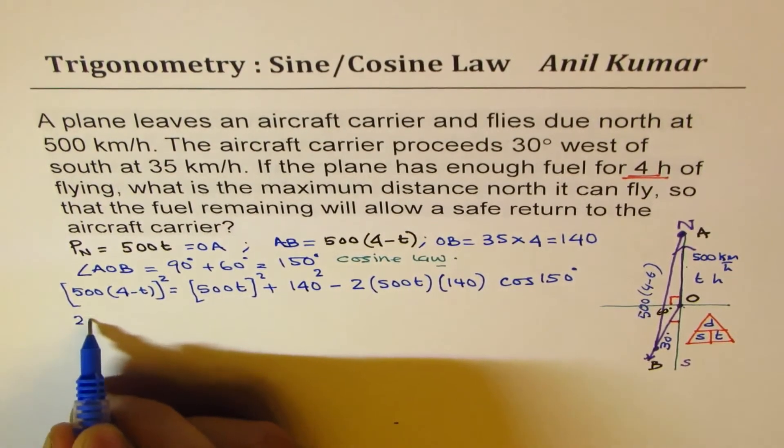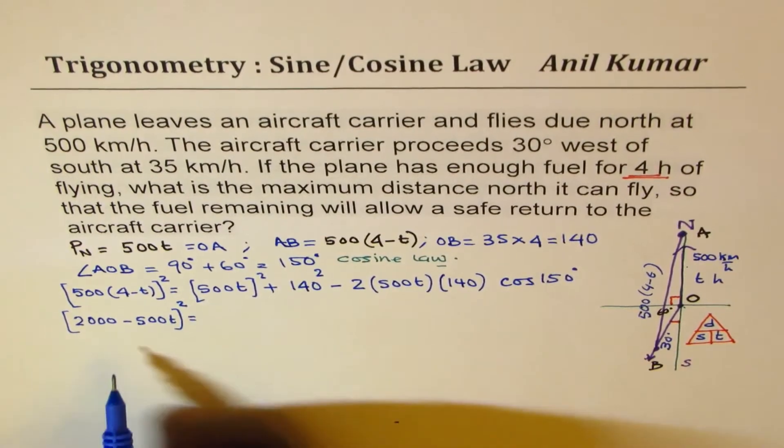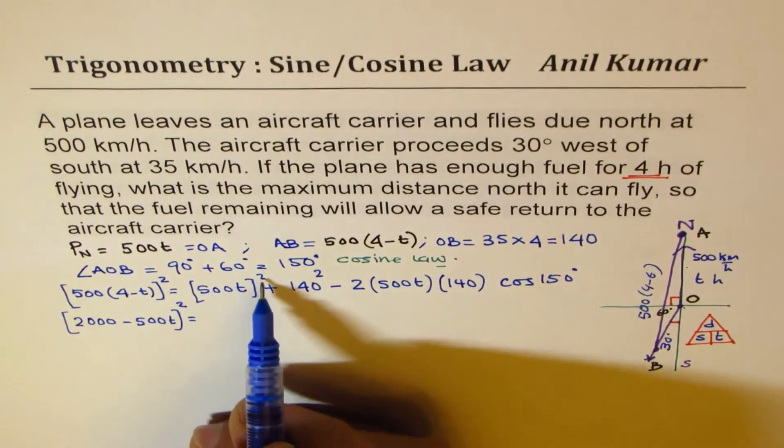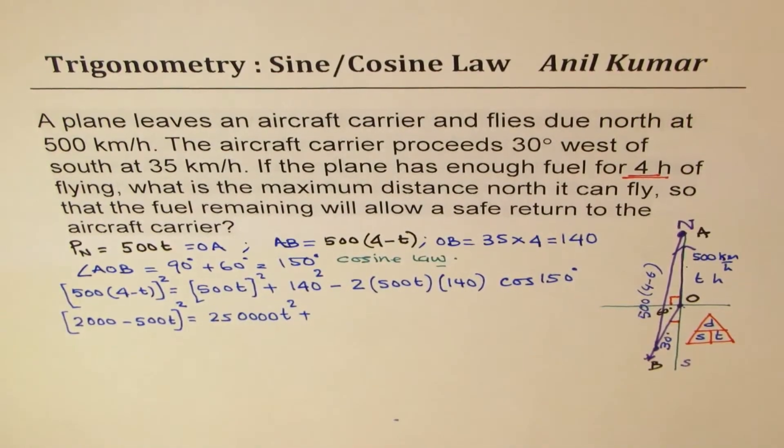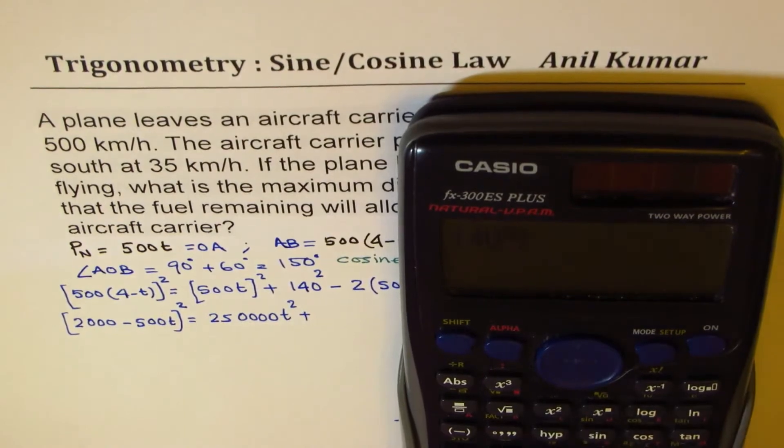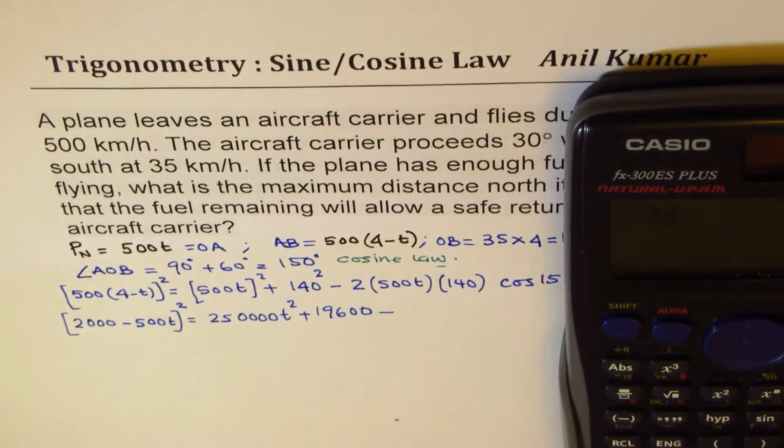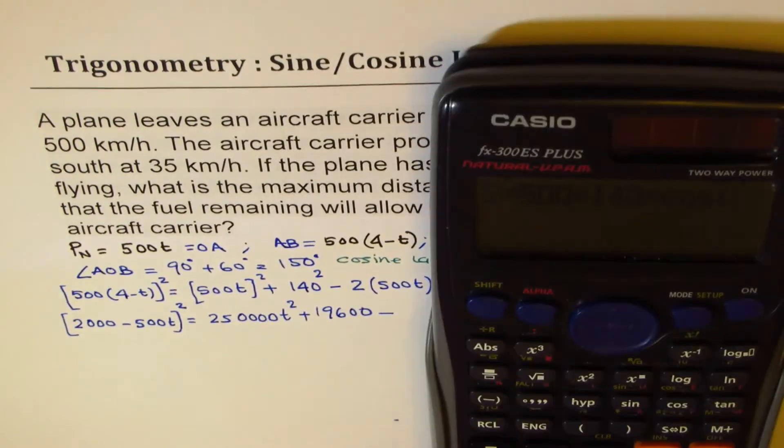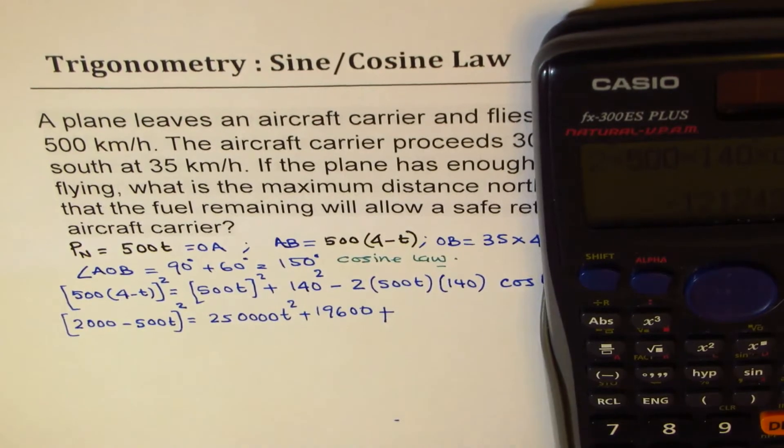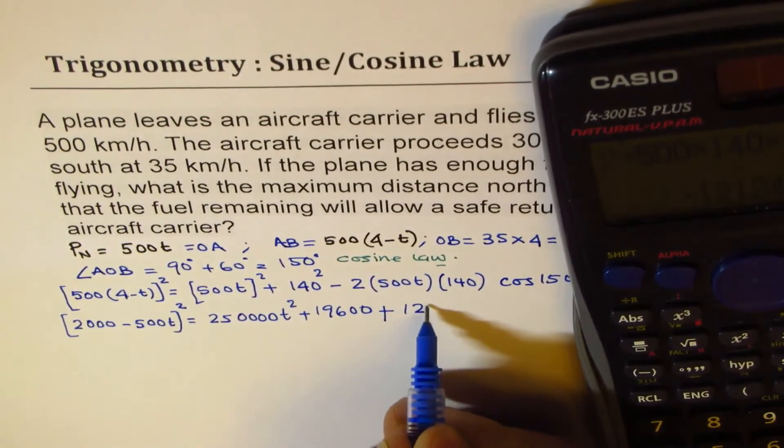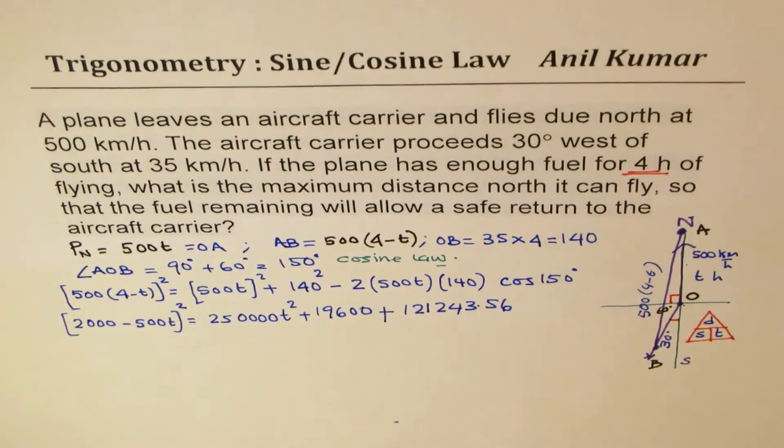So we get 2000 minus 500T whole square equals to. Now we can open all these terms, so 250,000 T square plus 140 square, let's do 140 square. 19,600, 19,600 minus, let's multiply all this, 2 times 500 times 140 times cos of 150. So it gives you negative something, so that makes this positive. So let's make it positive. It is 121,243.56. So we got that.